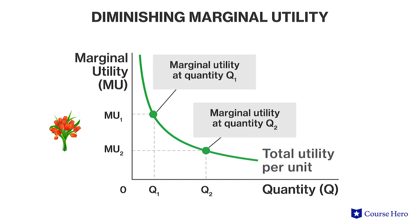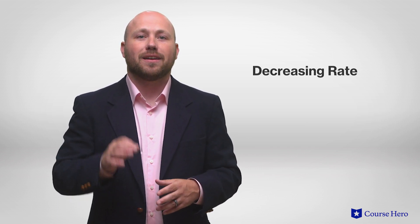But for each additional bouquet my father buys her, the marginal utility decreases because my mother does not have the need or desire for a large quantity of flowers. Her total utility is increasing, but each bouquet of flowers is adding smaller and smaller amounts of utils to her total utility. We could say that her total utility is increasing at a decreasing rate. The decreasing rate is the marginal utility portion of total utility.